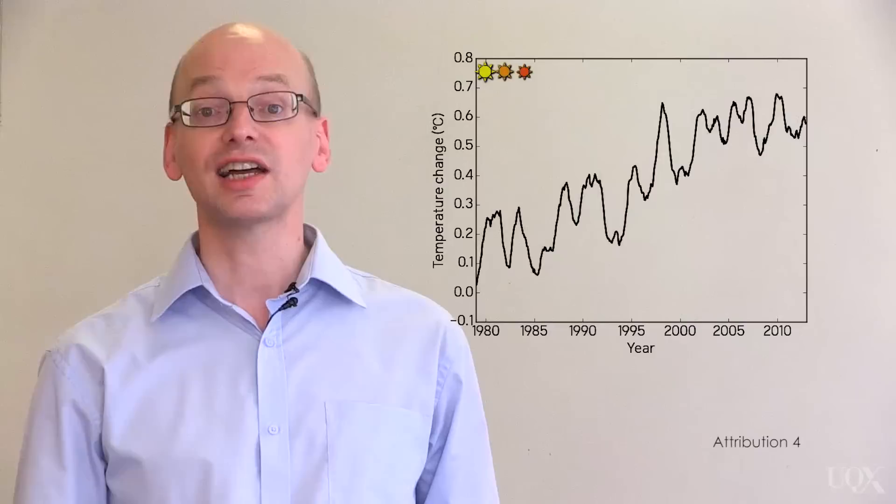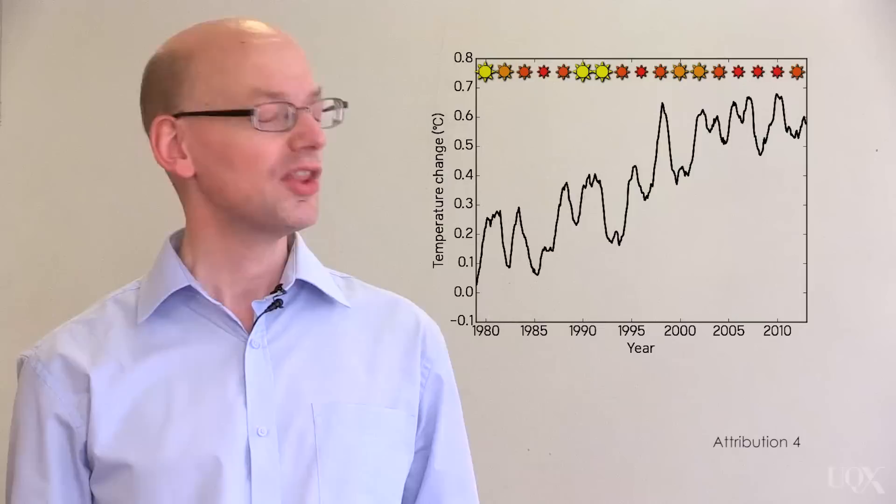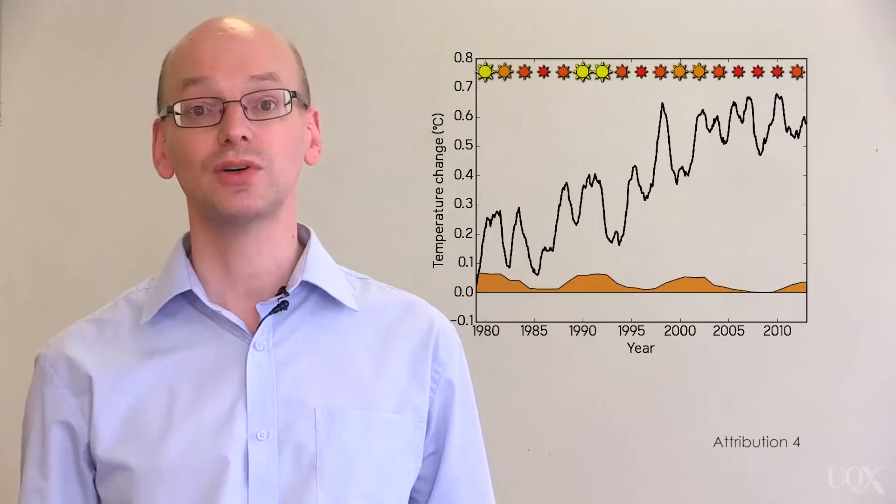Another factor is the solar cycle. Satellites tell us that the sun varies in brightness with the sunspot cycle. The last cycle has been particularly weak. A dim sun also offsets a bit of the warming.